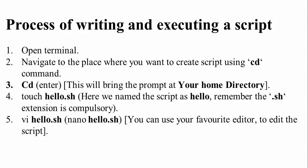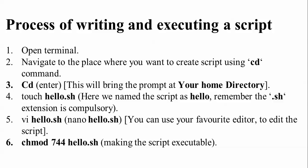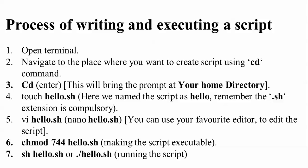After editing with your favorite editor, the next step is to give the script executable permission using 'chmod'. You can give '744', '755', or '777' for full permission. After setting permissions, the last step is to run the script — either with 'sh scriptname' or './scriptname'. These are the five to seven steps to remember for writing and executing a shell script.